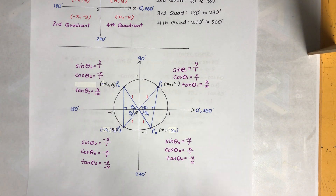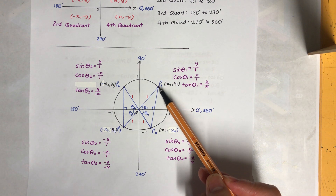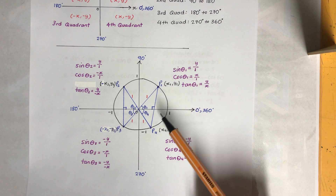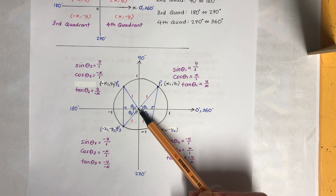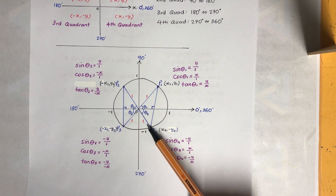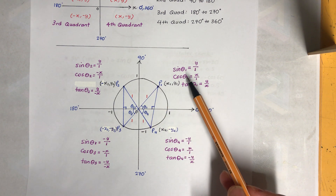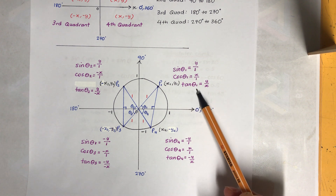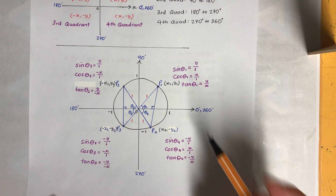Now let's look at the unit circle. This looks really complicated but it's not, so don't panic. I'll put point P1 here with coordinates (x1, y1). That is the radius, which is going to be one — remember, the unit circle is the circle with a radius of one. Let's focus on the first quadrant and find sine θ₁, cos θ₁, and tan θ₁.